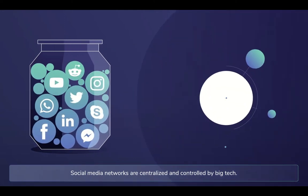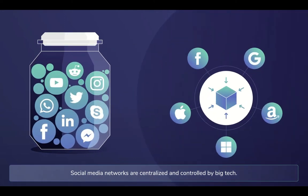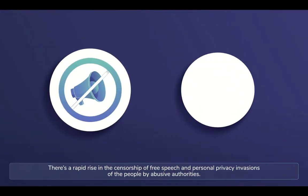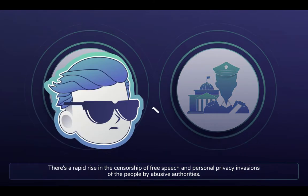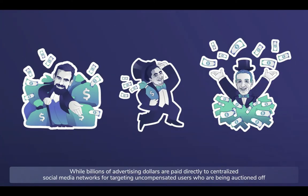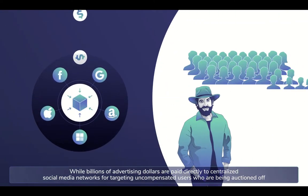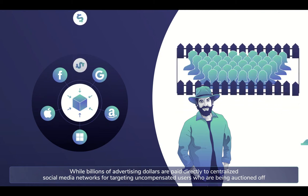Social media networks are centralized and controlled by big tech. There's a rapid rise in the censorship of free speech and personal privacy invasions of the people by abusive authorities, while billions of advertising dollars are paid directly to centralized social media networks for targeting uncompensated users who are being auctioned off.